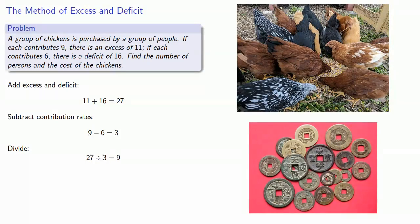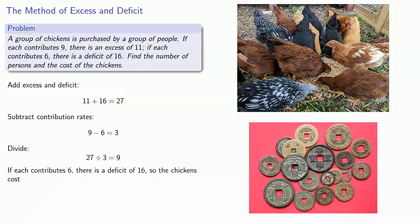Since we know there are nine persons and if each contributes six there is a deficit of sixteen, the total cost must have been nine times six plus sixteen, which is seventy.